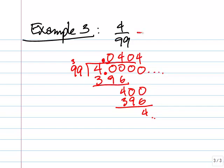So we can say that 4 ninety-ninths is actually equal to 0.04, and the pattern is 0, 4, 0, 4. So one way to denote that is to put a bar over the repeating decimals, 0, 4.